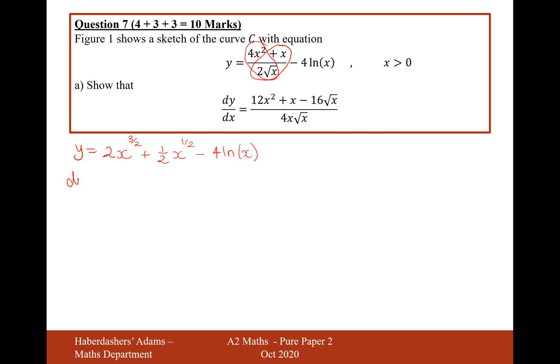Now we can start differentiating because it's in a more differentiable form. So times your power to the front and that will give you 3x^(1/2) plus 1/4 x^(-1/2). And then ln(x) differentiated is 1/x, so it's minus 4/x.